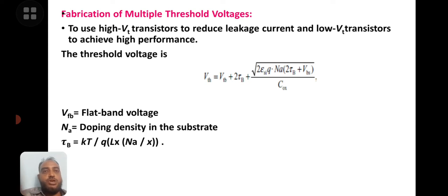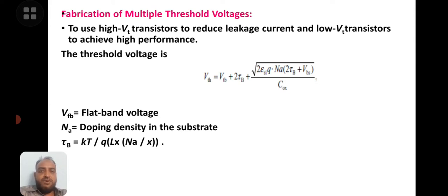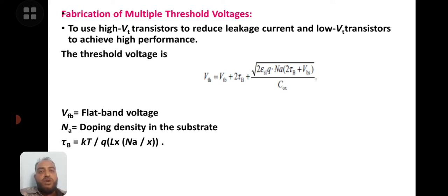This threshold voltage can be altered by any of these parameters. When threshold voltage is very large, there is a large delay and leakage power will be very less. If threshold voltage is very low, sub-threshold leakage will be large. To have high performance and low delay circuits, we need two kinds of threshold voltages.